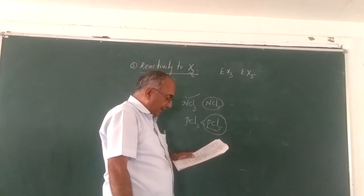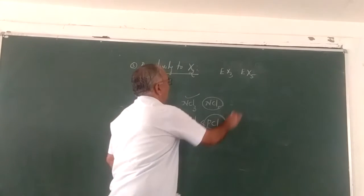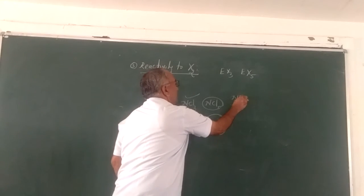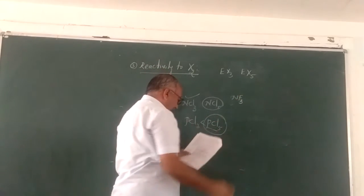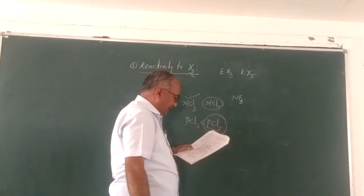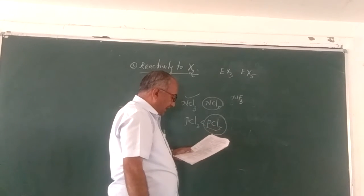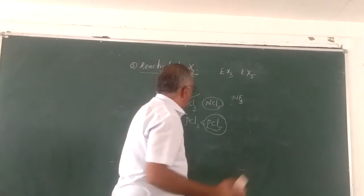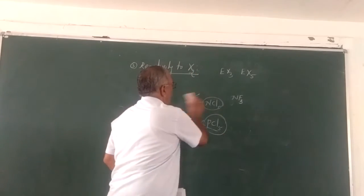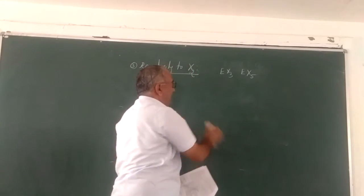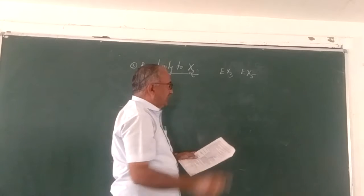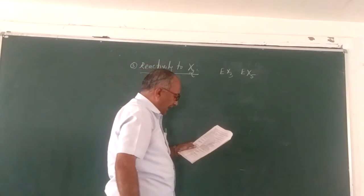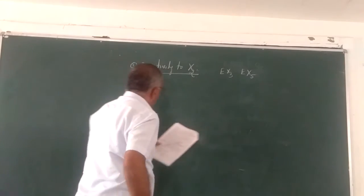Only nitrogen trichloride is known to be stable among nitrogen halides. The tendency of reactivity also decreases with halogens down the group.